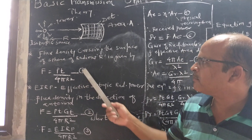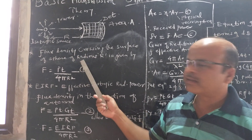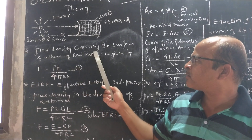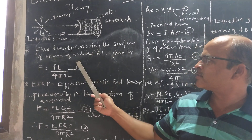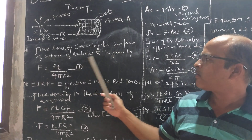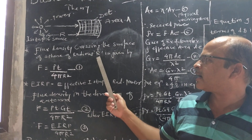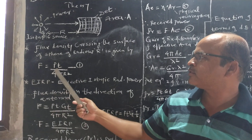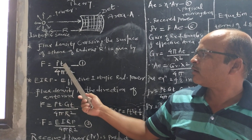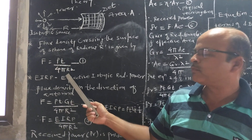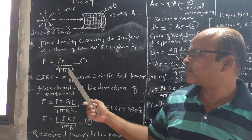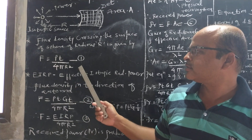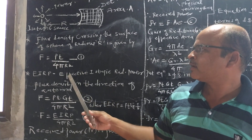In engineering electromagnetics, we have studied that the flux density crossing the surface of a sphere of radius R is given by: EF = PT / (4πR²), where PT is the transmitted power. This is equation number 1.